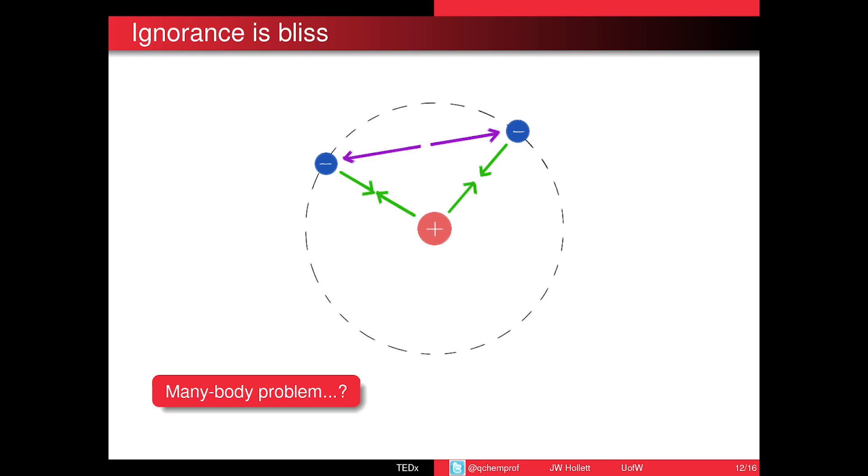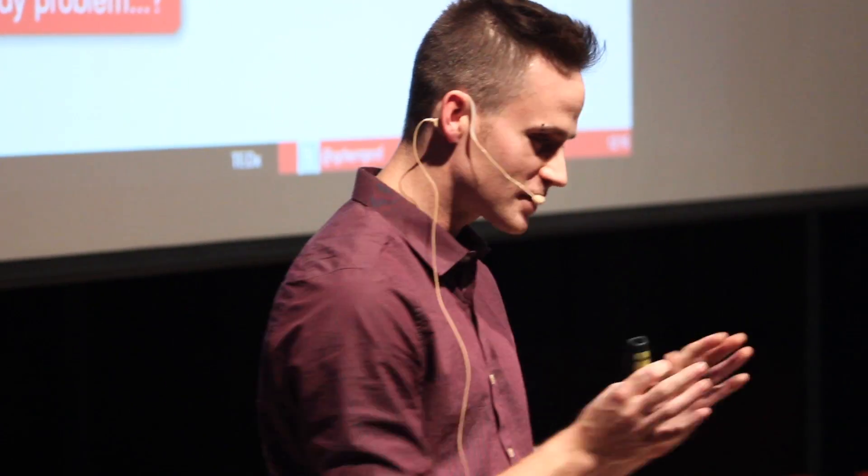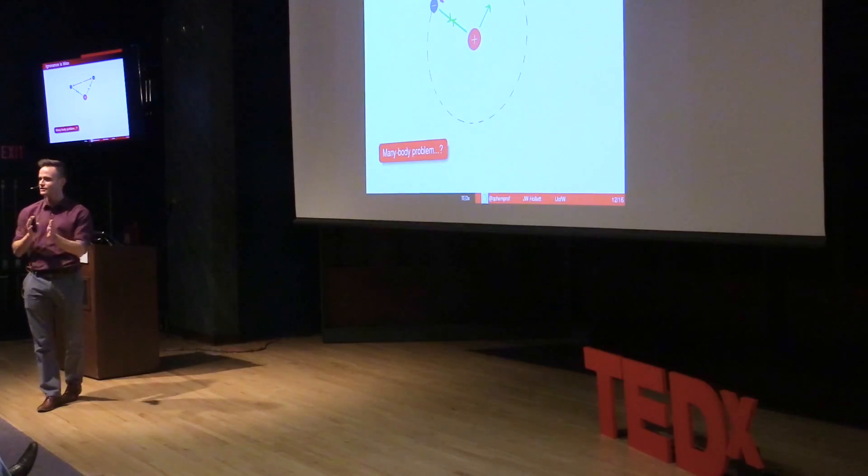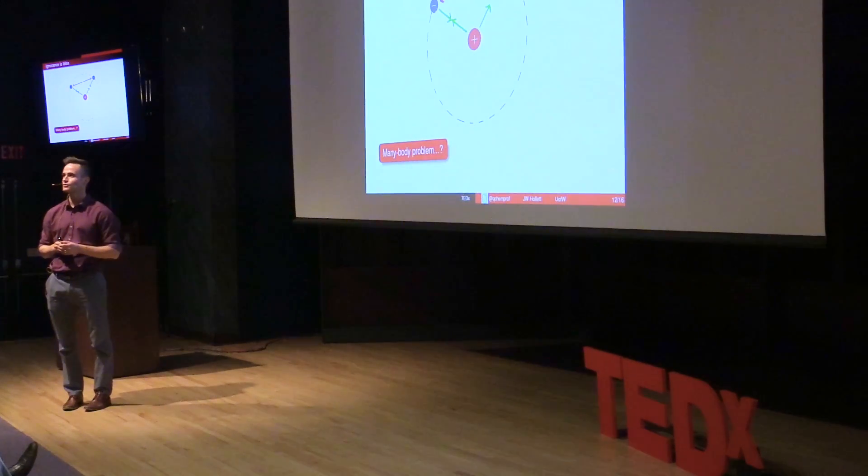Now let's go back to our two electrons and our nucleus. So we have this many-body problem, and just because we can't get it exactly, we can still tackle the problem and try and find a solution.